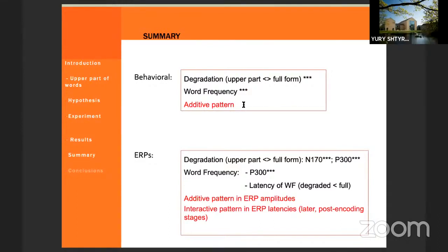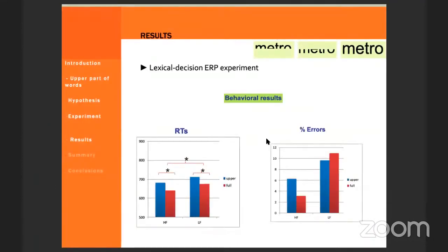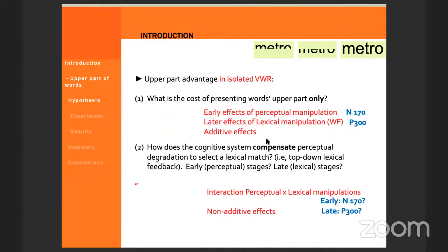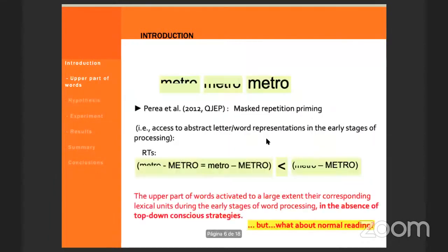I have a more general question. What makes the upper half more salient? I'm sorry if I missed it. Is this attention or is there something about letter shapes? Has anyone studied this, whether parts of letters that are in the upper half are more informative, more distinct?